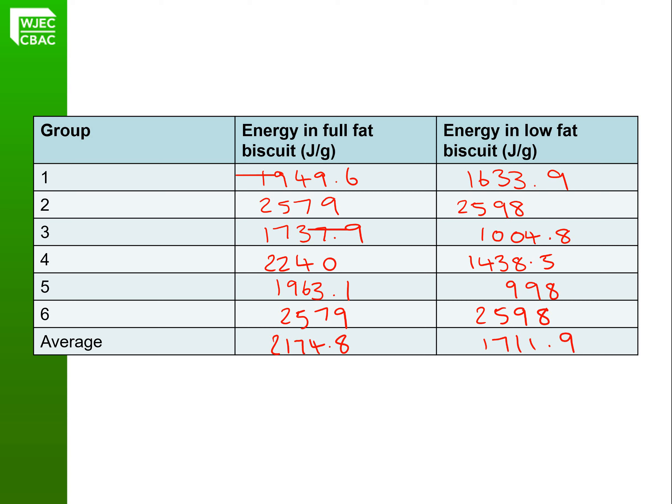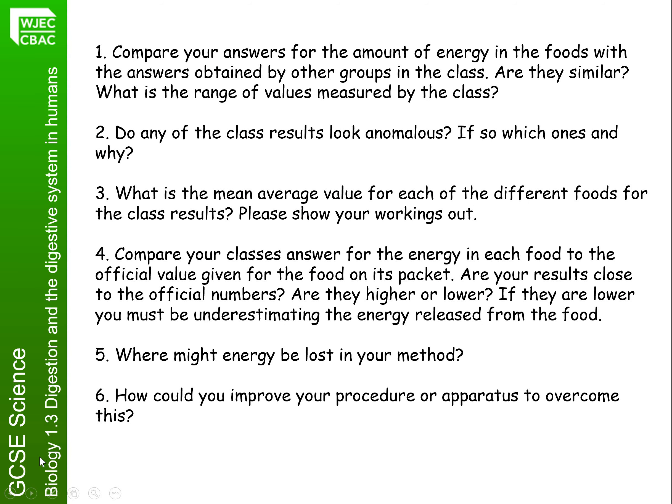Using those results, I would like you to write a conclusion on page 23: which type of biscuit has more energy, and can you explain why? Then answer questions 1, 2, and 3 at the top of page 24 — it's about comparing our answers with the other groups' answers, working out a range, identifying any anomalous results, and finding the mean average value for each of the different foods for the class results.